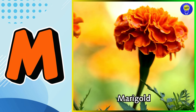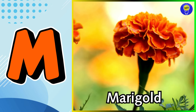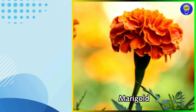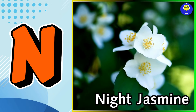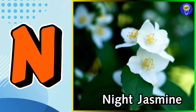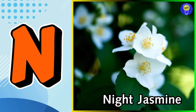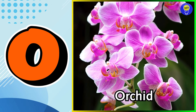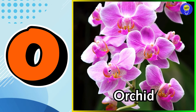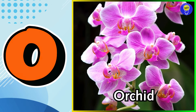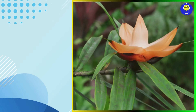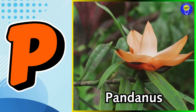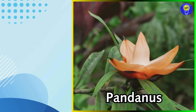M is for marigold flower. N is for night jasmine flower. O is for orchid flower. P is for pandanus flower.